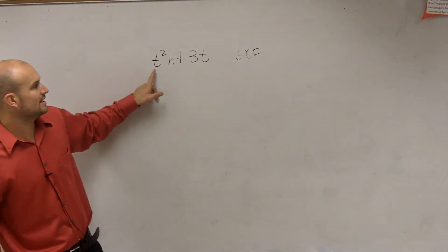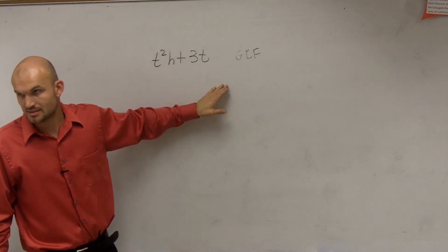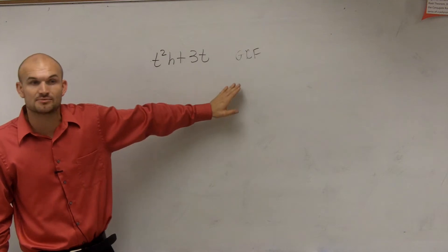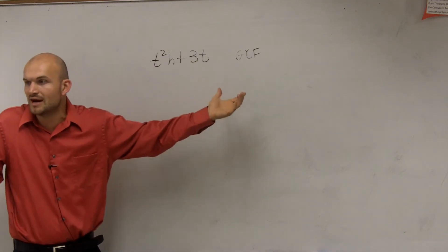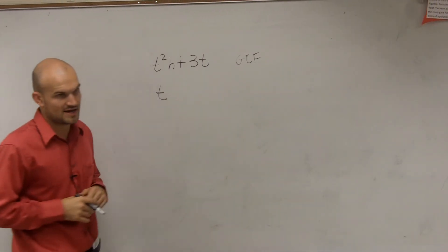So the first thing we look at is our t. Do we have a t in both of these terms? Yes. So t to what power is the largest power that we can divide into both of them? Just t, right? Because you always want to look at the smallest power and that's going to be the highest one you can divide into it. So therefore, t is going to be my first factor.